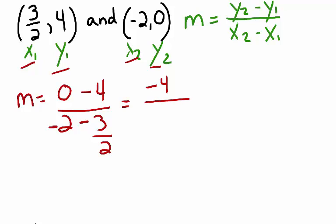Negative 2 minus 3 halves. Well, here we have an integer minus a fraction. In order to add or subtract, we need to make sure that they have the same denominator. My lowest common denominator is 2.